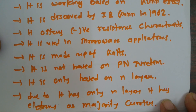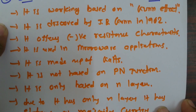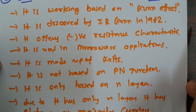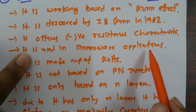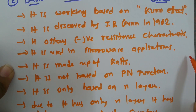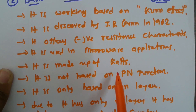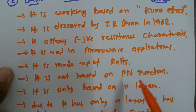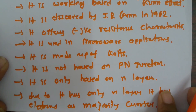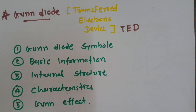To summarize the basic information: the GUN Diode works based on the GUN effect, discovered by J.B. GUN in 1962, and named after him. It offers negative resistance characteristic, which gives it extremely low reverse recovery time, enabling use at microwave frequencies. It is made of Gallium Arsenide, not based on PN junction, uses only N layers with electrons as the majority carrier, and is therefore also called the Transferred Electron Device.